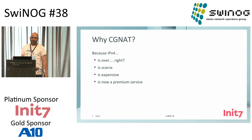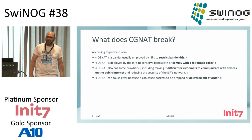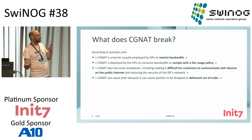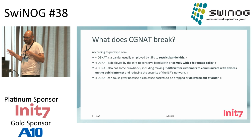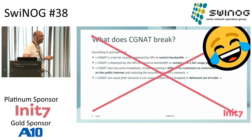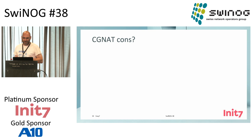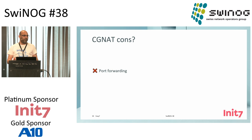So what does CGNAT break? Well, according to pure VPN — which is really interesting — it seems to restrict bandwidth, having a VPN will still go through it, it's here to comply with fair use policy, it makes it difficult for customers to communicate with devices on the public internet, and it seems to deliver packets out of order. What a bullshit. These VPN providers are crazy how they want to sell their stuff. What are the actual cons? If you don't have a public IP, you can't do port forwarding. So there is really nothing you can do to offer a public service from your home — except over v6, but not in v4.